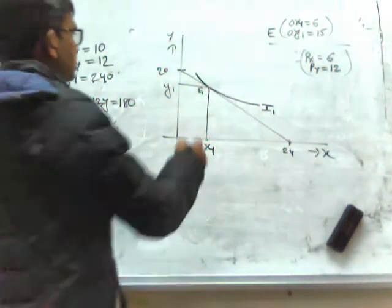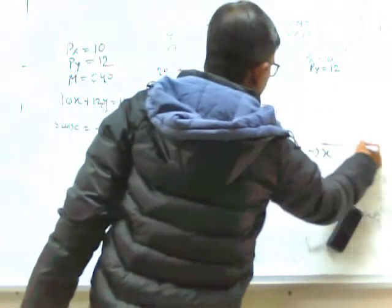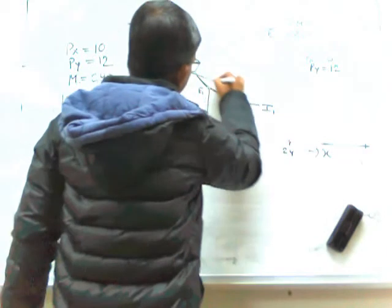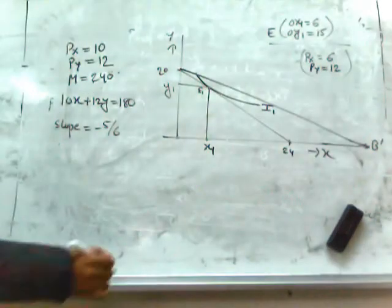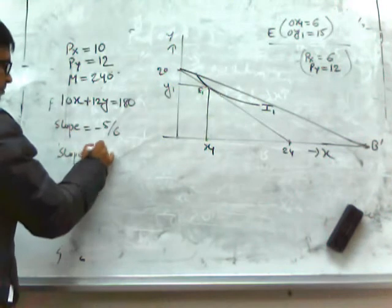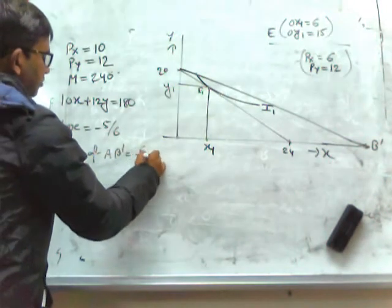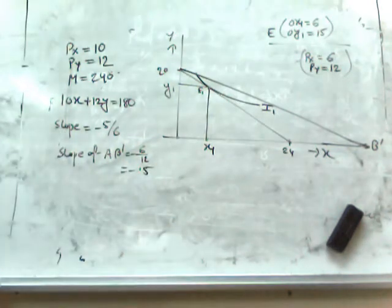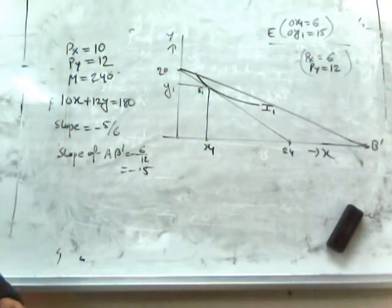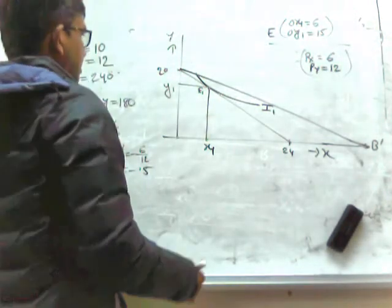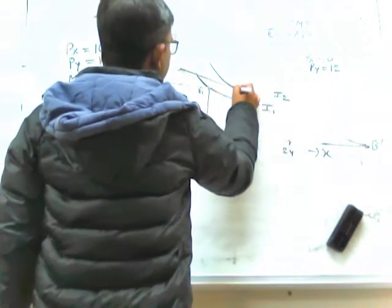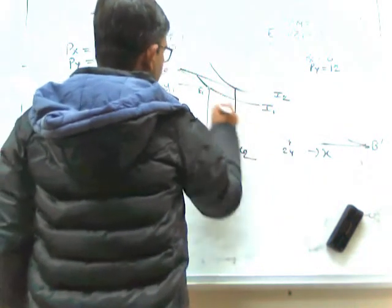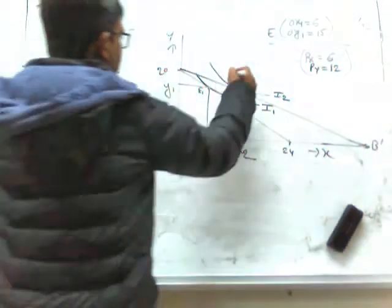With this price change, we will get a new budget line. Instead of 20 on the horizontal axis, it will now be 40. This is the new budget line AB dash. The slope of the new budget line is 6/12, which equals minus 0.5. The consumer now has to sacrifice only 0.5 units of Y to consume one additional unit of X. We get a new equilibrium on the higher indifference curve I2, with equilibrium consumption OX2. This new equilibrium point is E2.